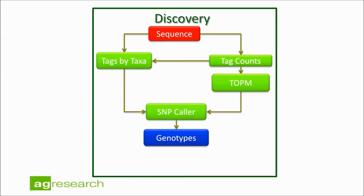Today we're going to run the discovery pipeline. This hands-on tutorial uses a reduced dataset — a couple hundred samples, two lanes of sequence data, with only the first 200 megabases of chromosomes 9 and 10 in maize retained. This allows us to do the exercise in a reasonable amount of time and is useful for testing as pipeline changes are made. We'll start with raw sequence, count the tags, create a tags on physical map file, create a tags by taxa file, then use that information to inform the SNP caller and create genotypes.